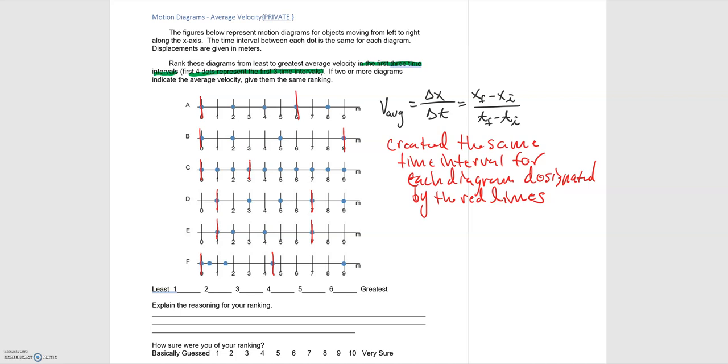Going down, taking the final position minus the initial position which are designated by those red lines, we have six meters for displacement in A. We have nine meters for displacement in B. We have three meters for displacement in C.